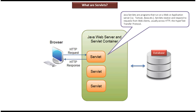An example of a web server is Tomcat, and an example of an application server is JBoss. So basically the HTTP client — the client can be a browser — sends an HTTP request to the servlet.